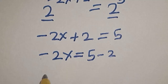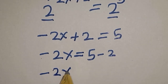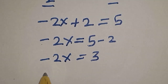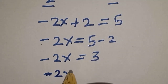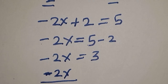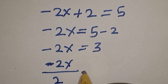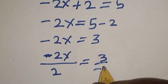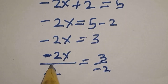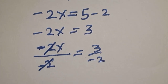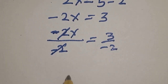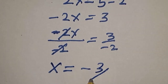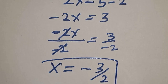From minus 2s plus 2 is equal to 5, subtracting 2 from both sides gives minus 2s is equal to 3. Dividing both sides by minus 2, we get s is equal to minus 3 over 2. That is the value of s.